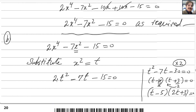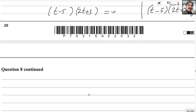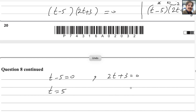So the factorization gives (T minus 5)(2T plus 3) equals 0. The two factors give T minus 5 equals 0 and 2T plus 3 equals 0. Therefore T equals 5, and from the second factor T equals minus 3 over 2.